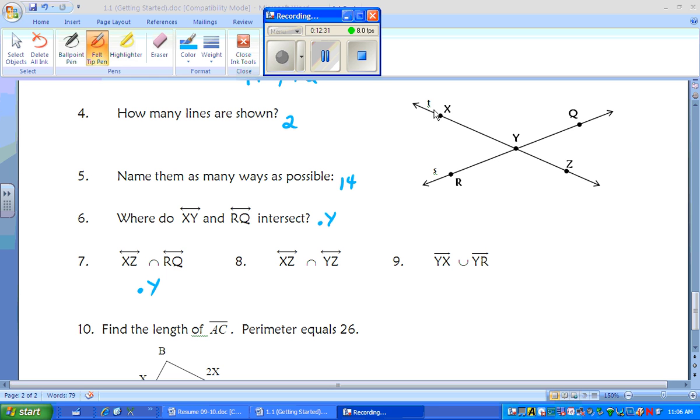Next, we have line XZ intersecting line YZ. So YZ is here but beyond, so that means it still keeps going beyond it. So they're intersecting the whole thing. They're intersecting, creating that line XZ, or you can name it as XY with a line over it. No matter what, it's still a line.